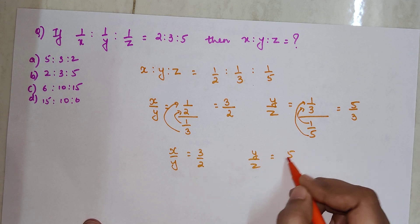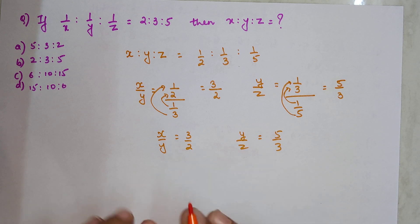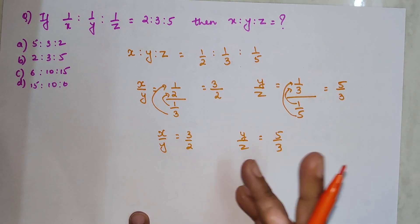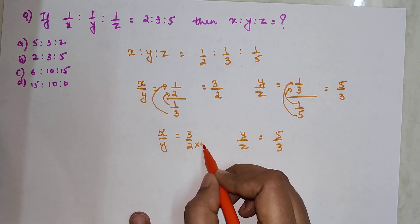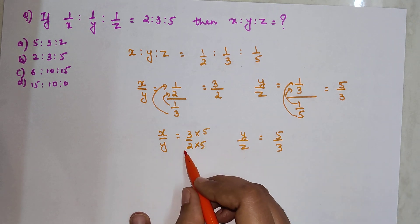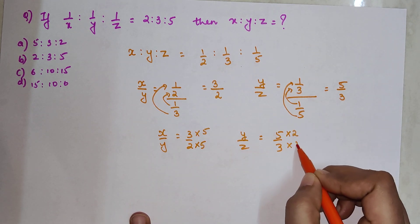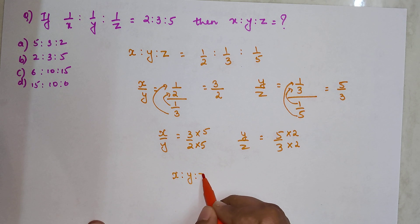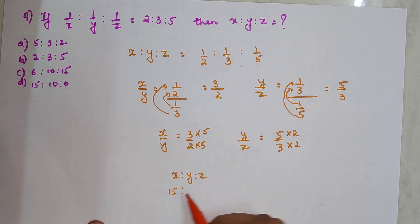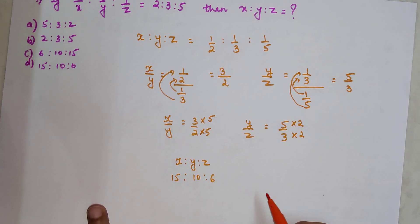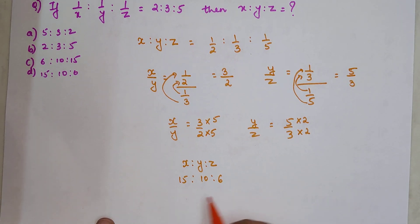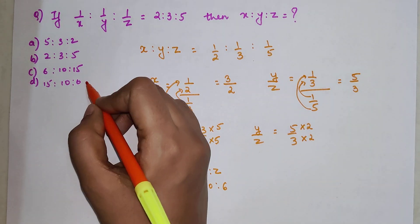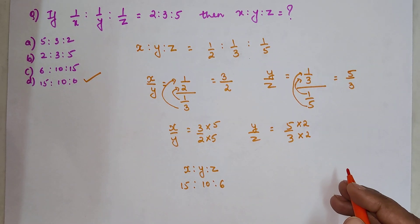So X/Y = 3/2 and Y/Z = 5/3. We need both Y values to be the same. Since 2 and 5 are both prime numbers, we multiply them by each other — multiply the first ratio by 5 and the second by 2. Your answer becomes X : Y : Z = 15 : 10 : 6. There is nothing common between them to reduce further, so option D is the correct answer.